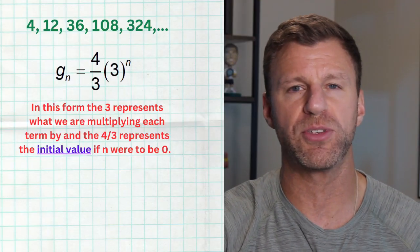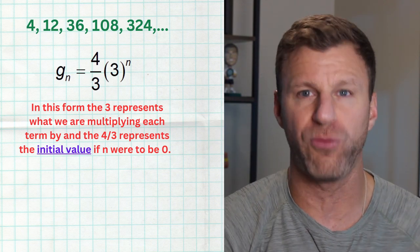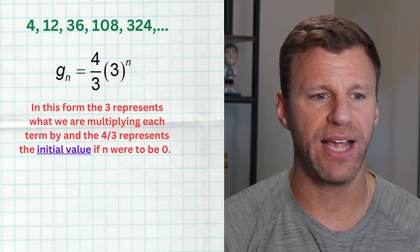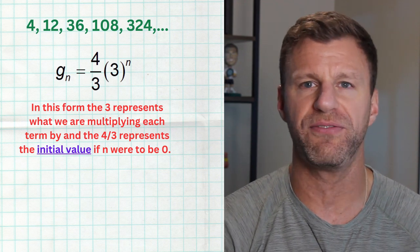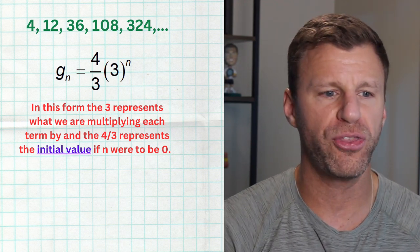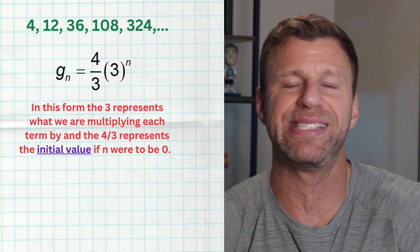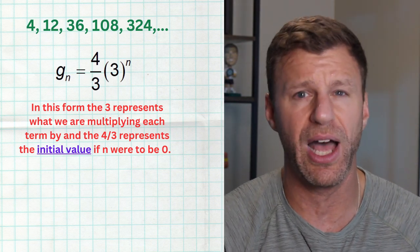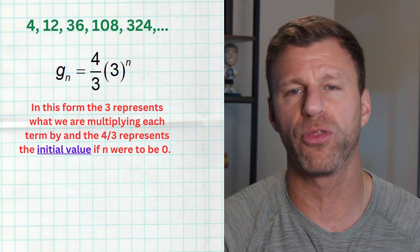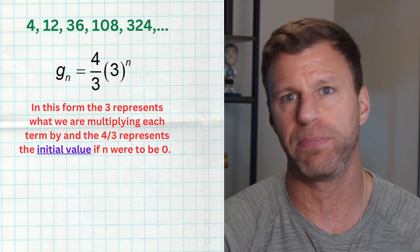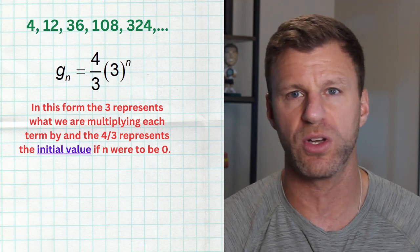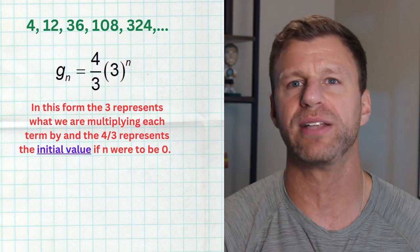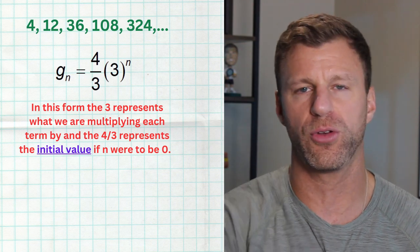In this final form, 4/3 times 3 to the n, the 3 represents our rate of change — the constant value we're multiplying by — and the 4/3 represents our initial value. If there were a zeroth term before the first, 4/3 is what it would be. Plugging in 0 gives 3^0 = 1, so 4/3 times 1 equals 4/3. In a sequence the first term comes from plugging in 1, but this is the concept of initial value in exponential form.